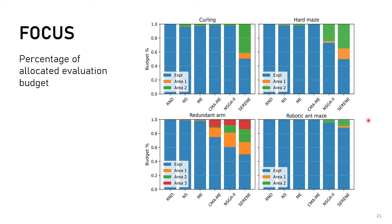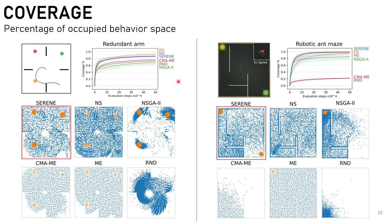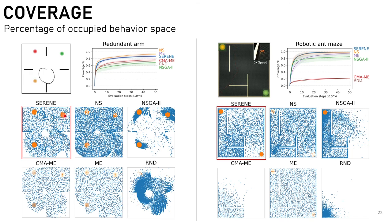Given that SERENE assigns less budget to exploration, we wondered how well its exploration performs. We measured this through the coverage metric — calculated by dividing the search space into a 50-by-50 grid and computing the percentage of occupied cells during the search. SERENE achieves almost similar coverage levels to Novelty Search in both environments, even with less budget. The whole space is well covered, though slightly less dense than Novelty Search overall, while coverage on the reward areas shown in orange is much denser than that found by Novelty Search.